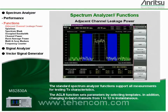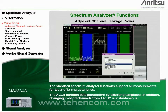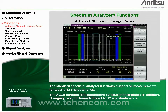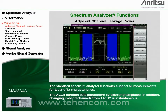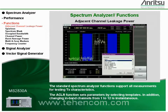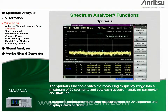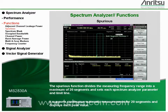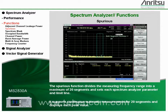The standard spectrum analyzer functions support all measurements for testing transmitter characteristics. The ACLR function sets parameters by selecting templates. In addition, changing in-band channels from 1 to 12 is instantaneous. The spurious function divides the measuring frequency range into a maximum of 20 segments and sets each spectrum analyzer parameter and limit line.